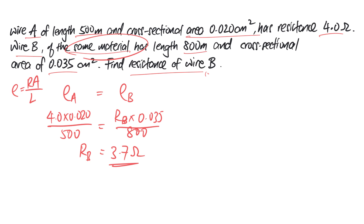Now, why is this method better? Because if you equate them both together, there's no need to waste time making sure units are in their SI units. For example, you can see that the area here is in cm², where the length is in meters. As long as both sides have area in cm², they will cancel each other, so there's no need to actually change them to meters squared.